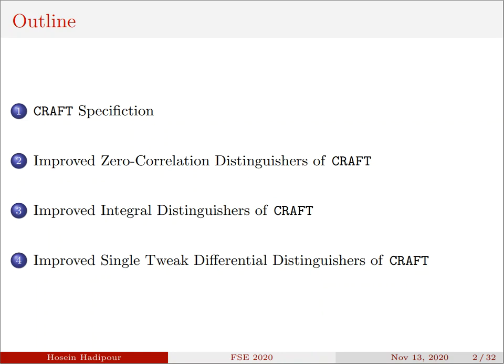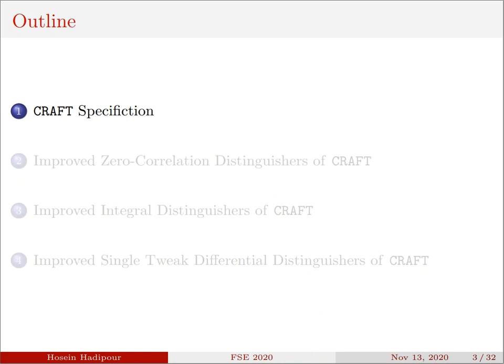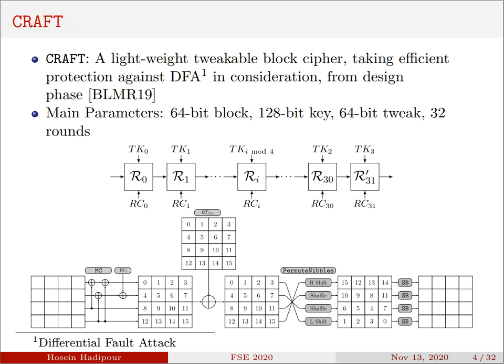Finally, I'd like to tell you about how we significantly improve the differential distinguishers of CRAFT in a single-tweak model. So let me give a short description of CRAFT. CRAFT is a lightweight tweakable block cipher with a Skinny-like structure that was introduced in FSE 2019. Efficient protection against differential and fault attack has been considered from the design phase.